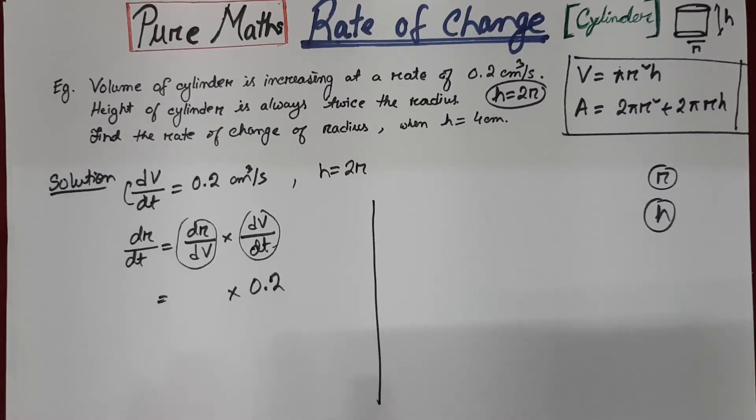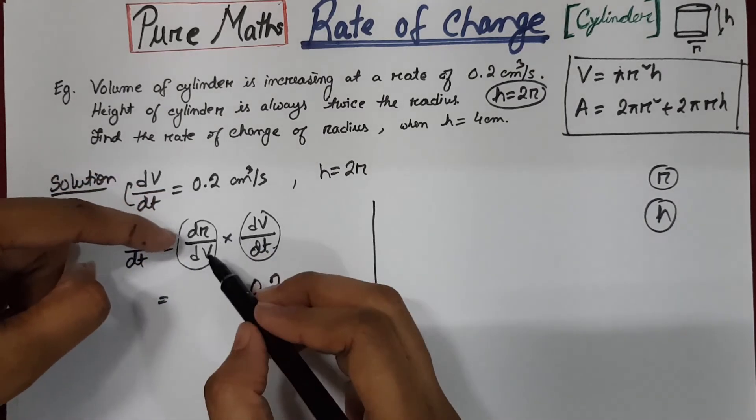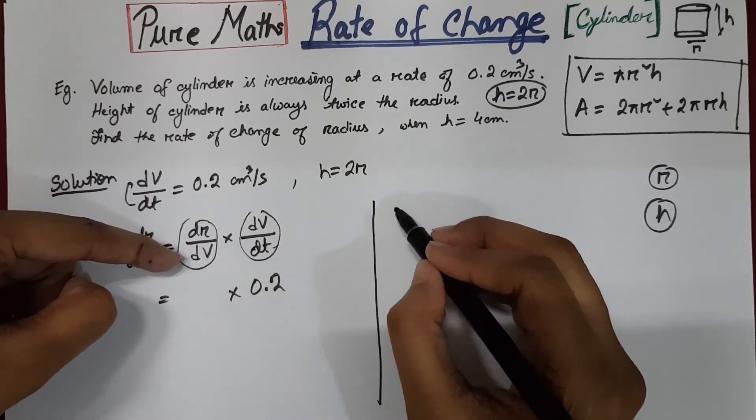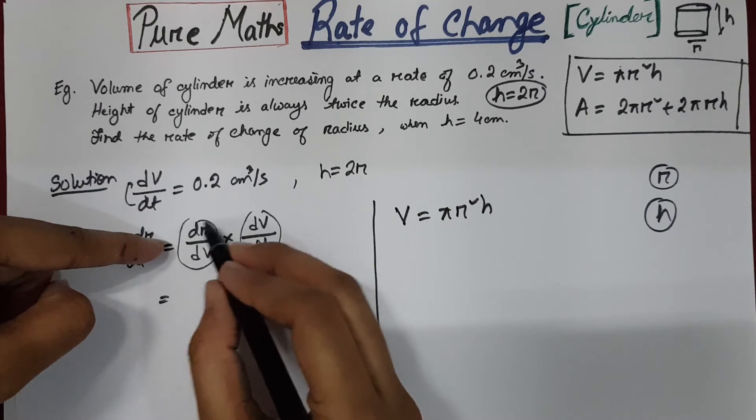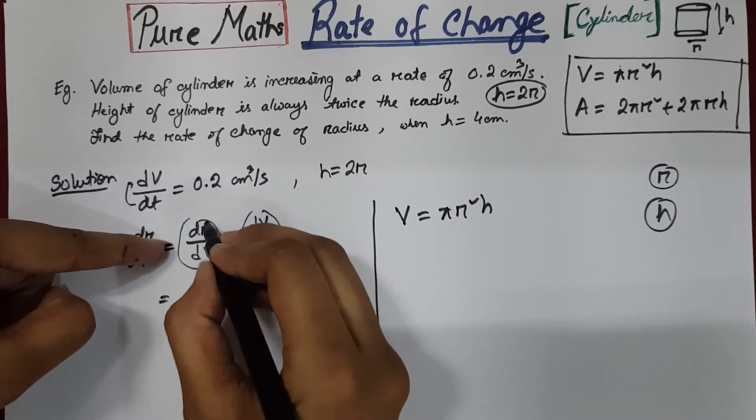So it can be radius or height but not both. So since we have dr by dv, you need to differentiate with respect to the radius.